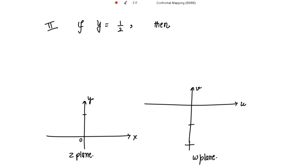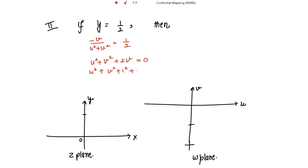Second, if y = 1/2, then substituting again we get -v/(u² + v²) = 1/2. After simplifying we get u² + v² + 2v = 0. To complete the square for v, since 2v can be seen as twice 1·v, we add and subtract 1². This gives u² + (v + 1)² = 1.